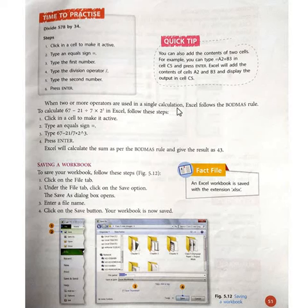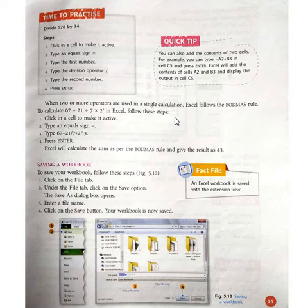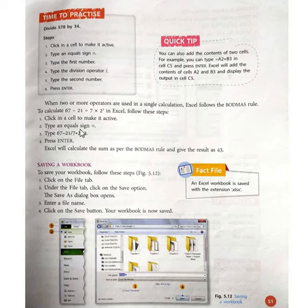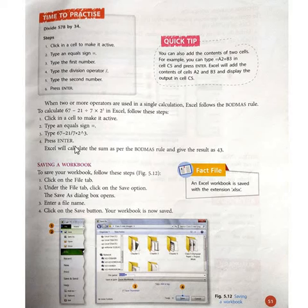When two or more operators are used in a single calculation, Excel follows the BODMAS rules. To calculate 67 minus 21 divided by 7 multiplied by 2 raised to 3, click in a cell, type an equal sign, then type the expression. Press Enter and Excel will calculate the result following BODMAS rules, giving the answer 43.